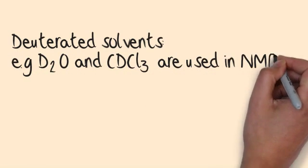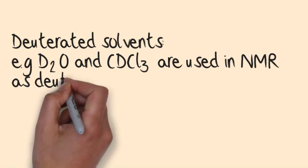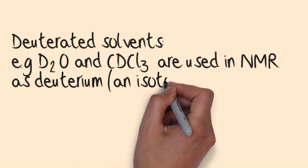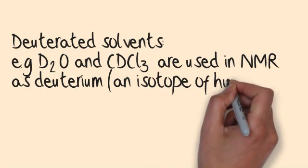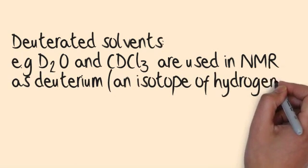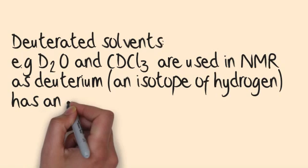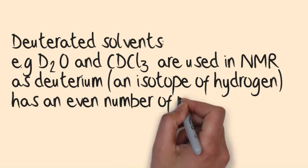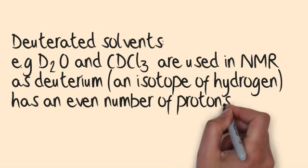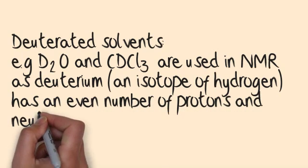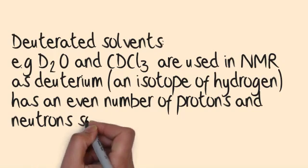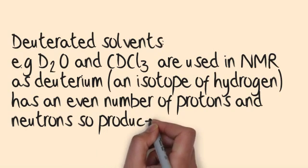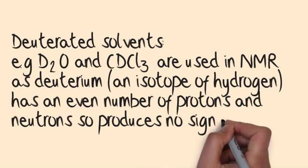Deuterated solvents, for example D2O and CDCl3, are used in NMR as deuterium, which is an isotope of hydrogen, has an even number of protons and neutrons, so produces no signal.